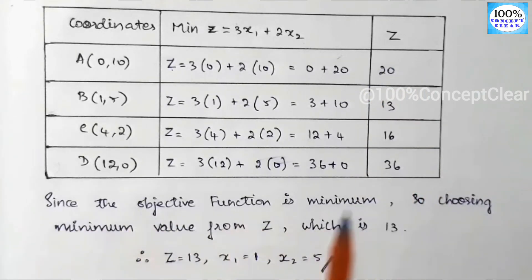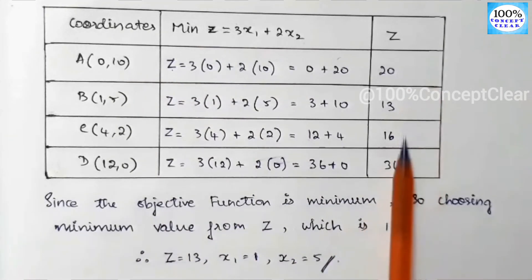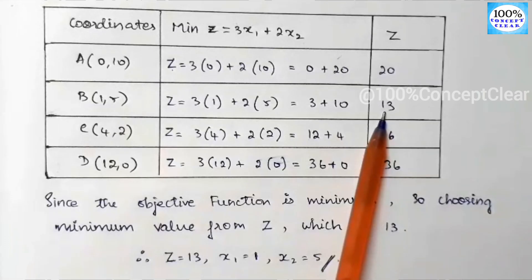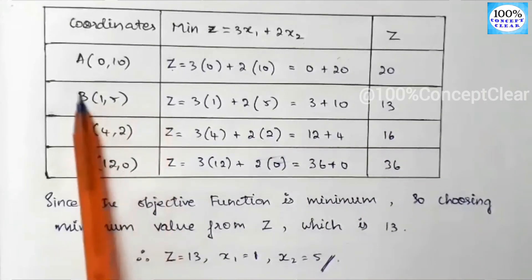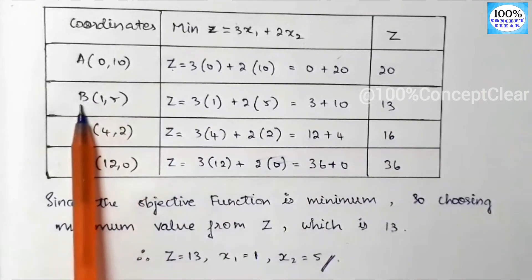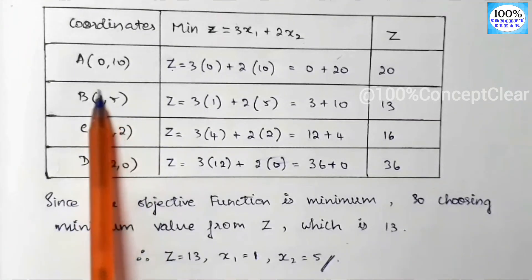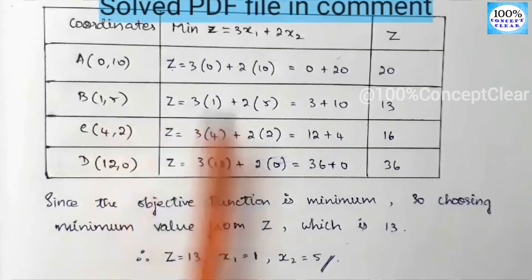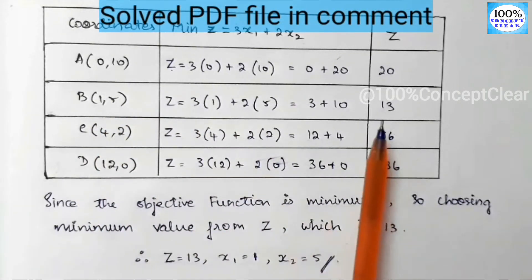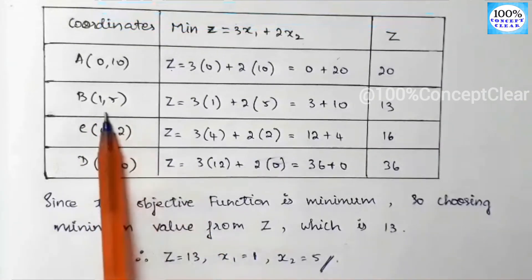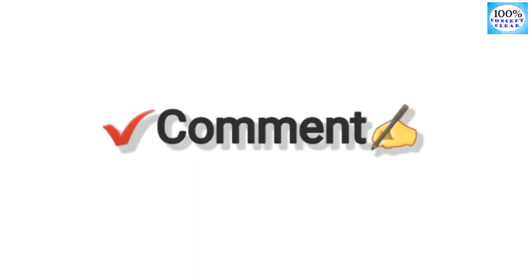Since the objective function is minimum, we choose the minimum z value. The minimum z value is 13, which corresponds to corner point B with coordinates (1, 5). Therefore, z equals 13, x1 equals 1, and x2 equals 5.